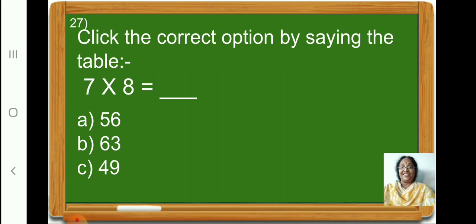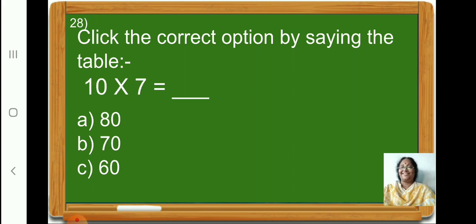Here, children, you have to click the correct option by saying the table. 7 eights are 56. So, let us put a tick on option A, 56. Again, you have to put a tick on the correct option by saying the table. 10 sevens are 70. So, put a tick on option B, 70.